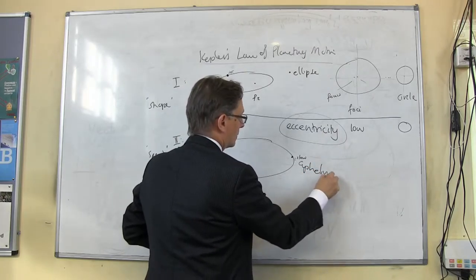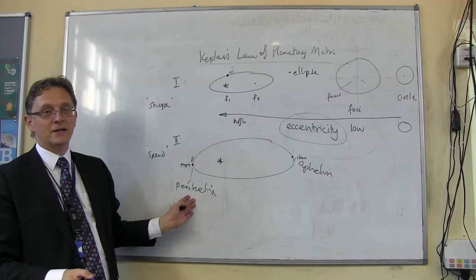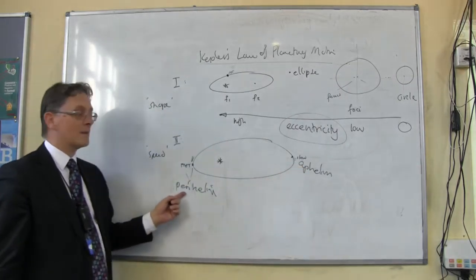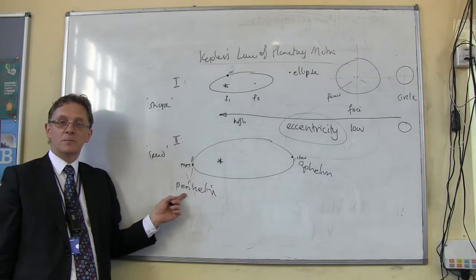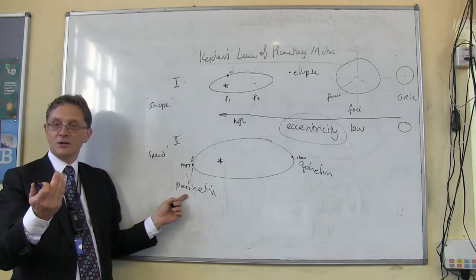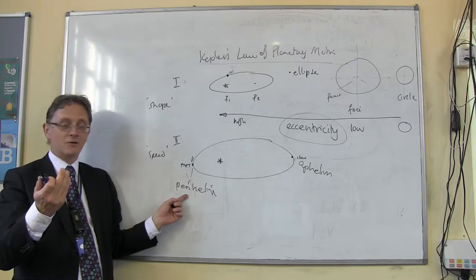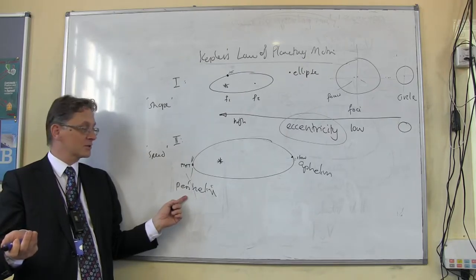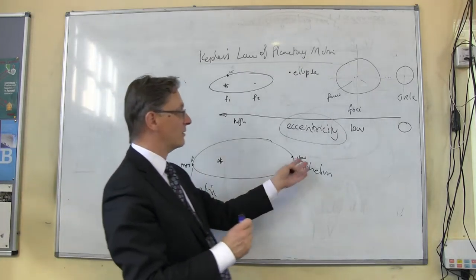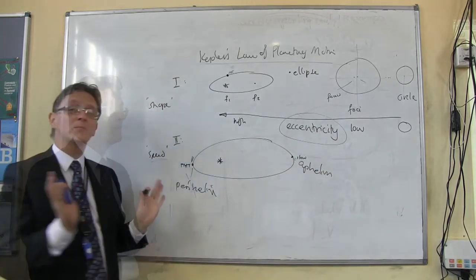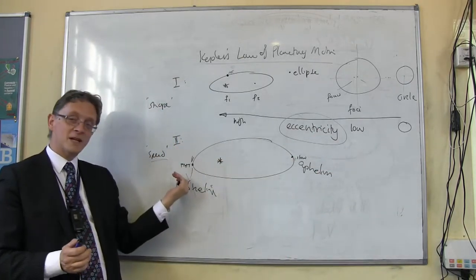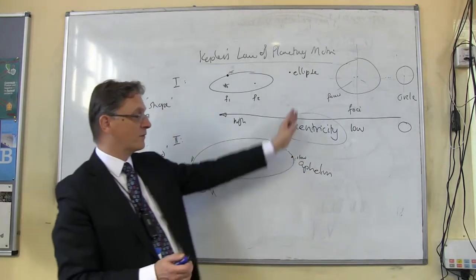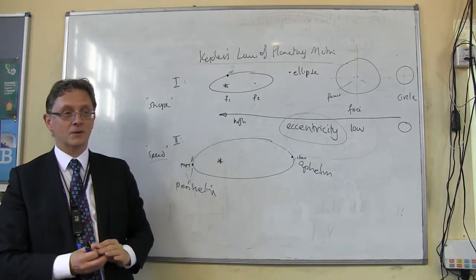The far point is called aphelion. Peri means close and ap means far away. The way to remember it: think of the word peril. If you went close to the Sun, you'd be in great peril — perihelion. Aphelion is when you're furthest away. The basic idea is: when planets are near perihelion, they have to go faster; when they're at aphelion, they need to go slower — otherwise they'd fly off into space or get pulled into the Sun.